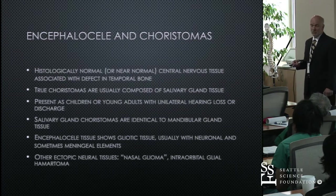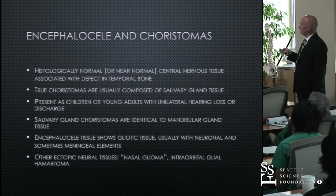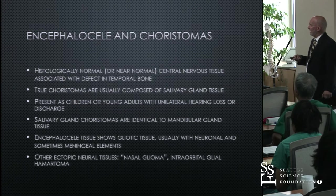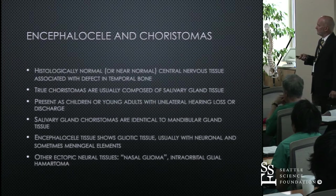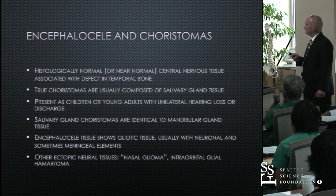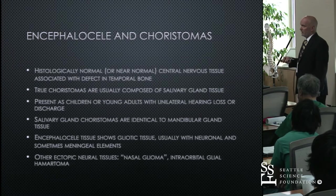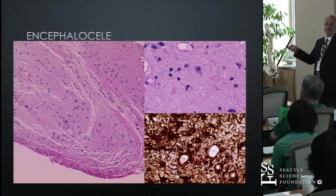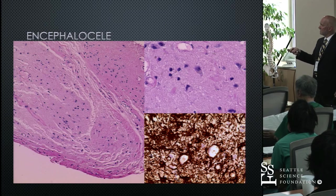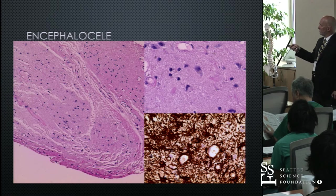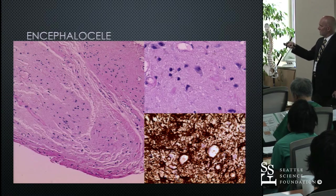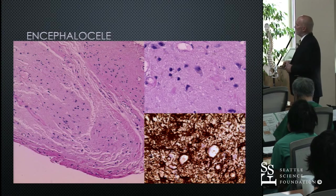Encephaloceles, of course, are tissues that look histologically normal or near-normal. They include central nervous system tissue, usually with some defects of the temporal bone. There are true choristomas composed of pure salivary gland tissue, but they're quite rare. Histologically, there's usually a gliotic reaction with benign neurons and meningeal elements. You can see normal neural tissue, normal neurons, and a rind of leptomeningeal tissue. At higher power you can see neurons and glial cells, with astrocytes reactive on immunostaining — just a reaction to the encephalocele.